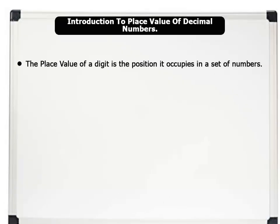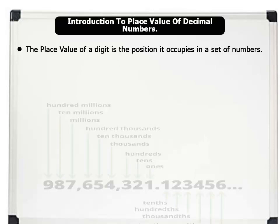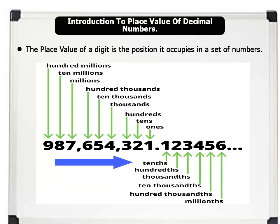The place value of a digit is the position it occupies in a set of numbers. In our last lesson we saw the place value of only large numbers. However, the image on the board shows the place values of both large and small numbers, and we shall focus on the small numbers after the decimal point: 1. Tenths. 2. Hundredths. 3. Thousandths. 4. Ten thousandths. 5. Hundred thousandths. And 6. Millionths.